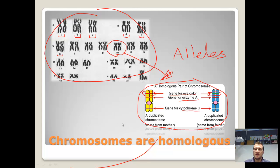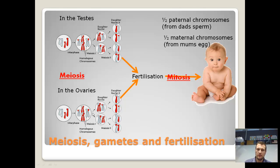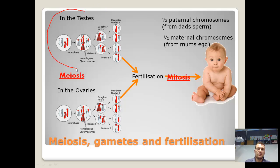Why do we have chromosomes in pairs? It all goes back to reproduction. Over here we have the process of cell division known as meiosis. That example there is in the testes, and over here the ovaries of the female — so in the testes of dad and in the ovaries of mom.